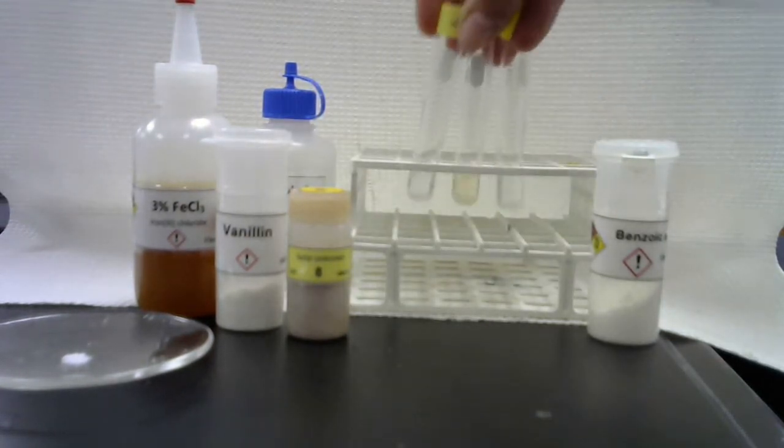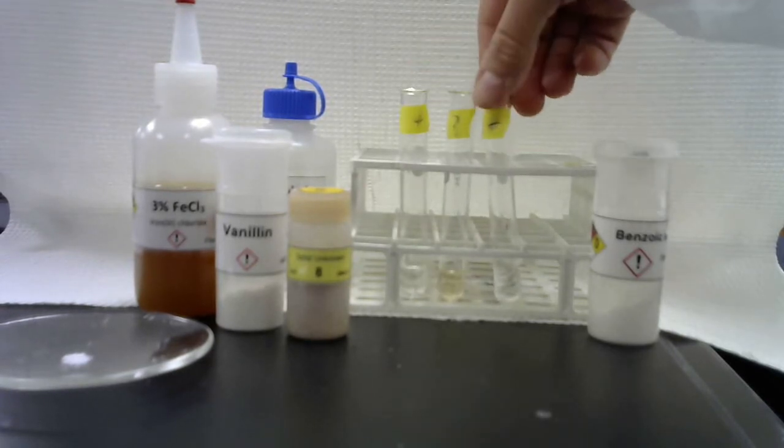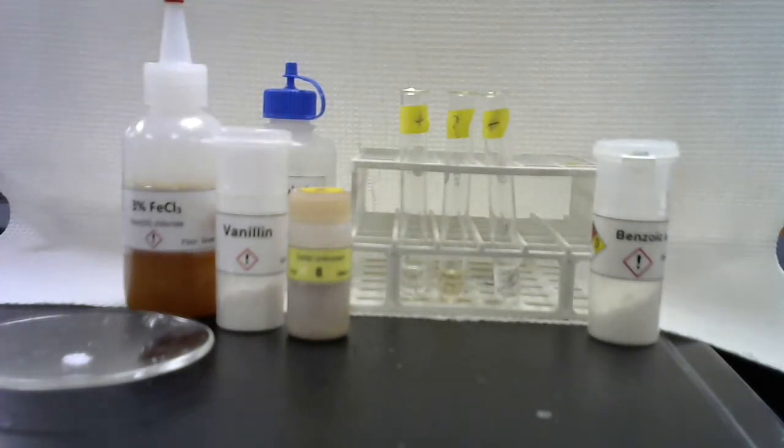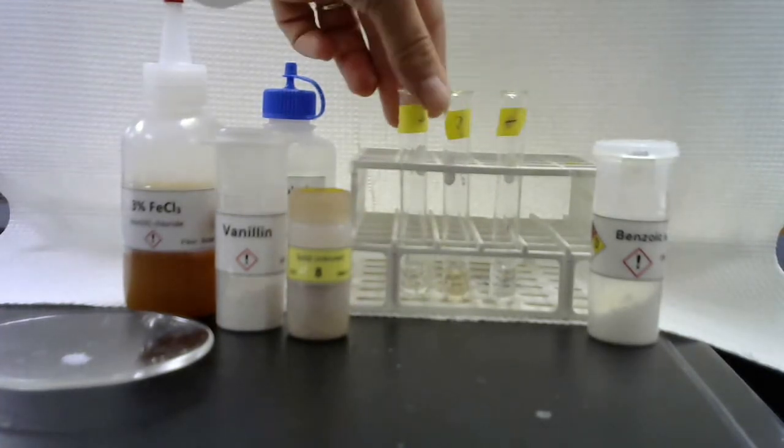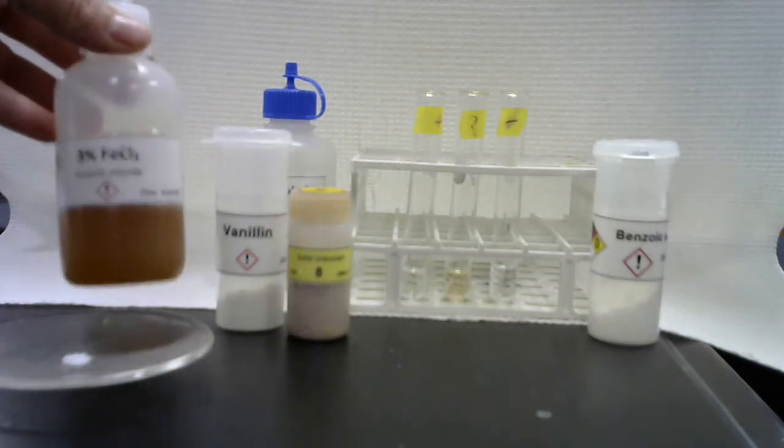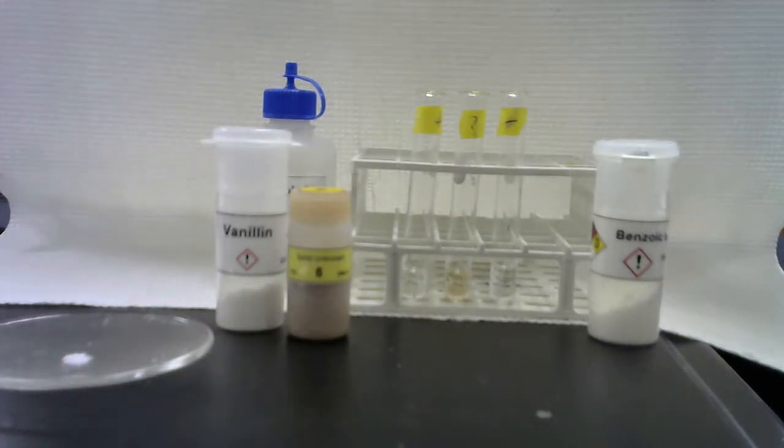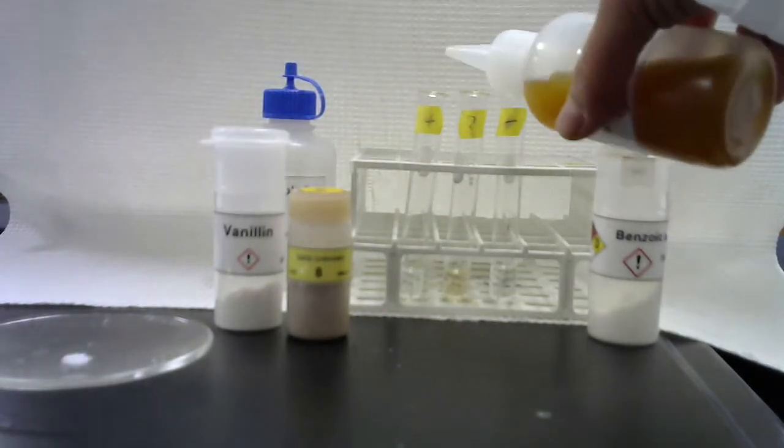All right, that looks nice and dissolved. Now next, the test calls for adding three to five drops of the iron chloride solution to the test tube. You'll be looking for a bright color to form, even briefly, that indicates a phenol. So here's the iron chloride. The known positive is vanillin.